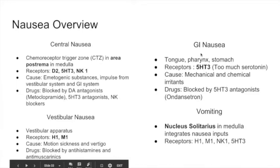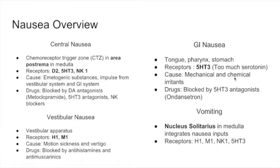The next type is GI nausea or gastrointestinal nausea. These can come from anywhere in the GI tract, specifically the tongue, pharynx, and stomach. It is caused by mechanical and chemical irritants that enter our GI tract. The receptor involved in GI nausea is serotonin or 5-HT3, and it is caused by too much serotonin. We can resolve GI nausea by blocking the serotonin receptor with ondansetron, which is a serotonin antagonist.